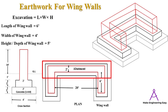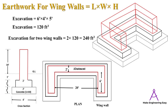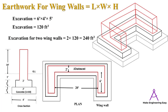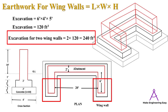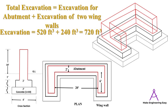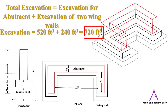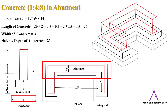Now we find the excavation quantity for two wing walls. The length of each wing wall is six feet, width is four feet, and height from ground level to the base is five feet. Multiplying length × width × height gives the quantity for one wing wall, then multiplying by two gives 240 cubic feet for both wing walls. Adding the abutment excavation of 520 cubic feet gives a total excavation of 720 cubic feet.